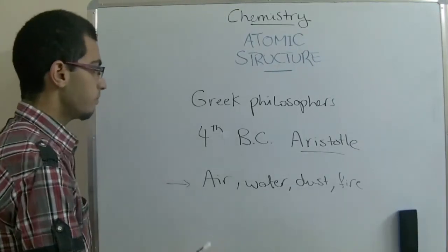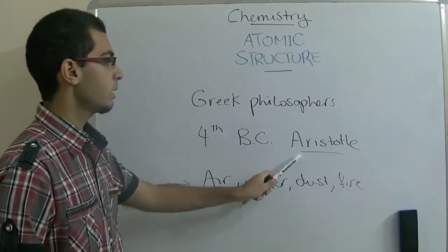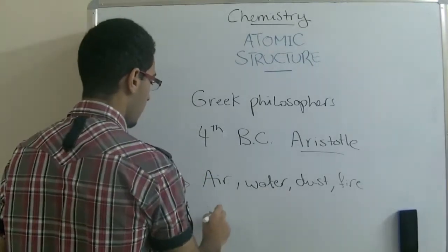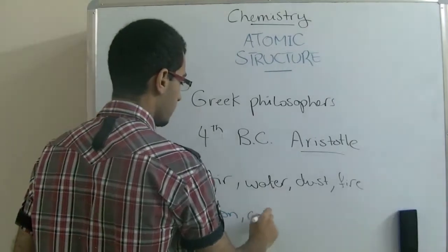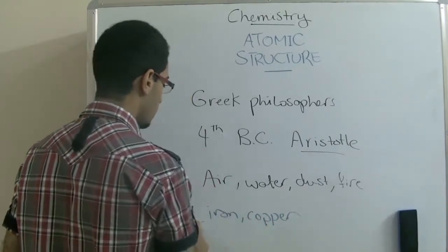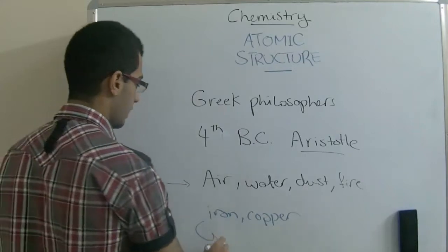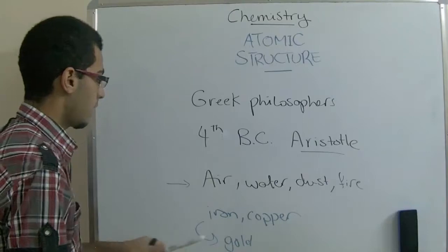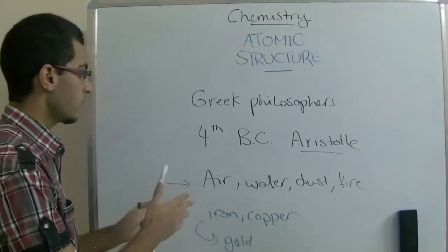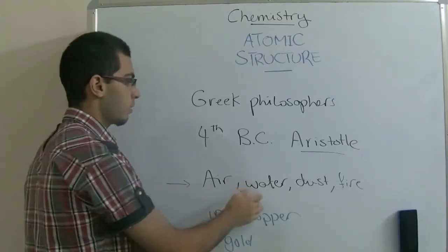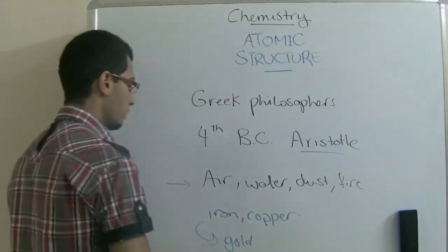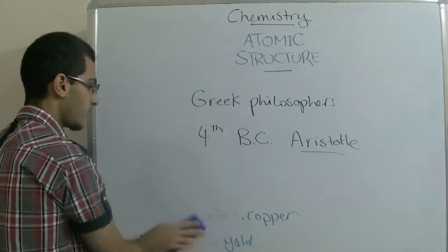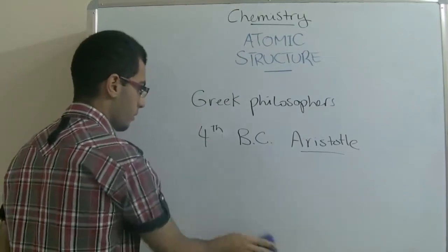People in this era where Aristotle lived thought that cheap metals like iron and copper could be changed into noble metals like gold just by changing the constituents of air, water, dust, and fire. Of course, this was rejected when science improved later on.